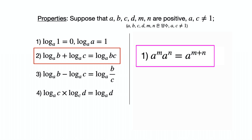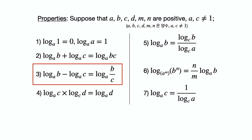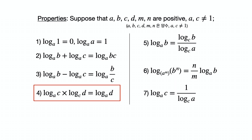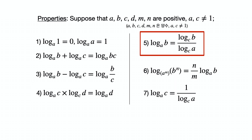Property 2 can be proved using exponent property 1 from earlier in this video. Property 3: log base a of b minus log base a of c equals log base a of b over c. Property 4: log base a of c times log base c of d equals log base a of d. Property 5: log base a of b can be translated to log base c of b divided by log base c of a.